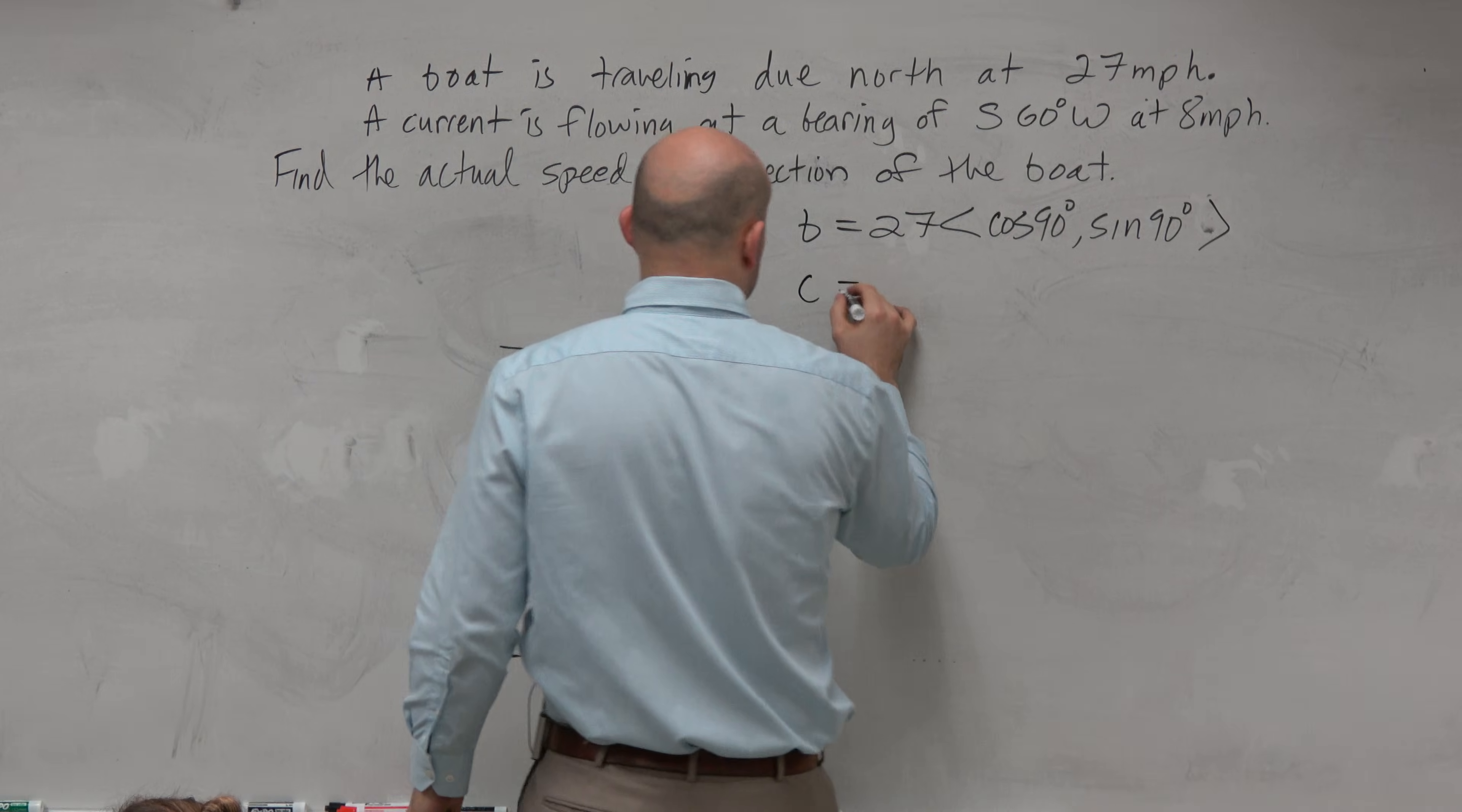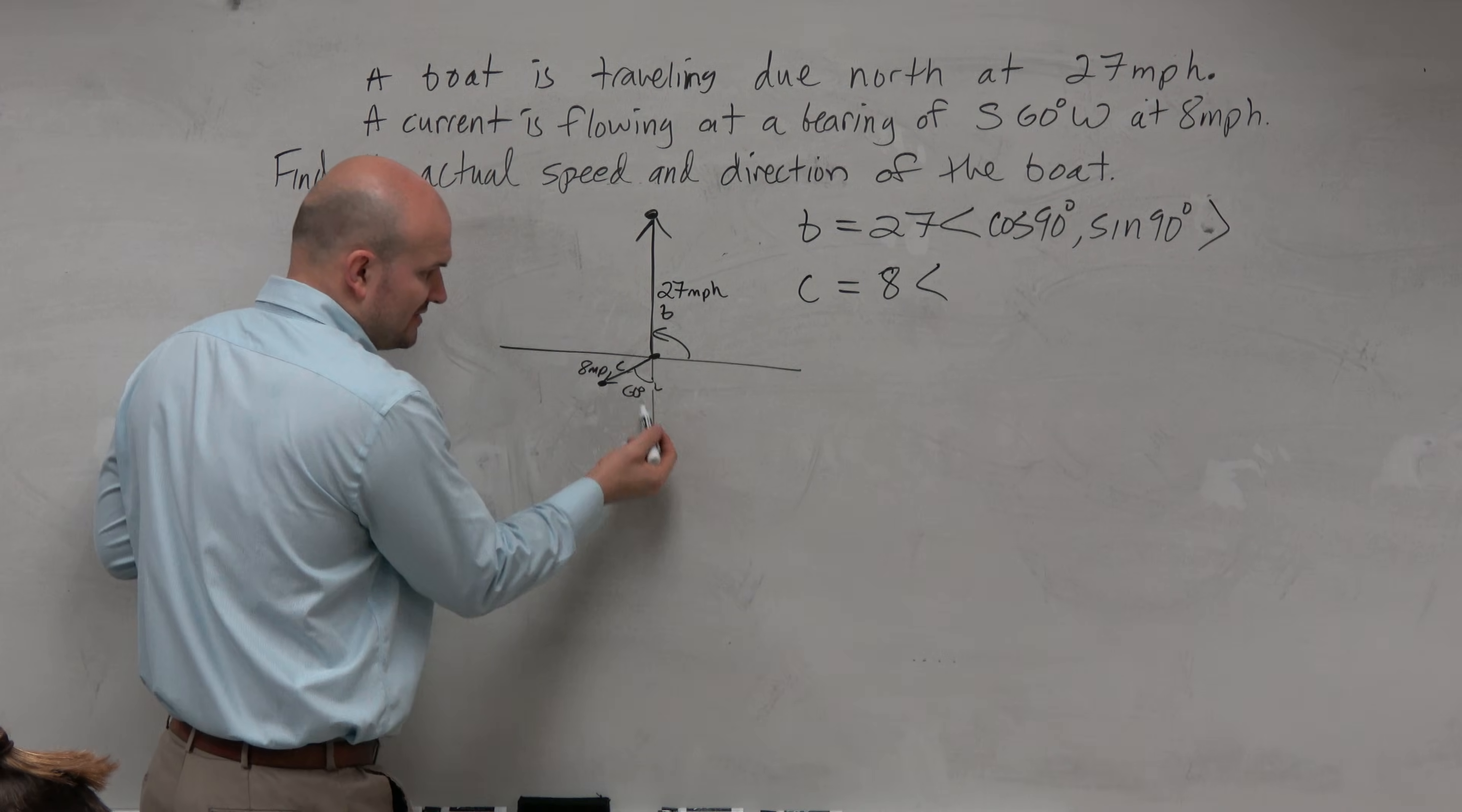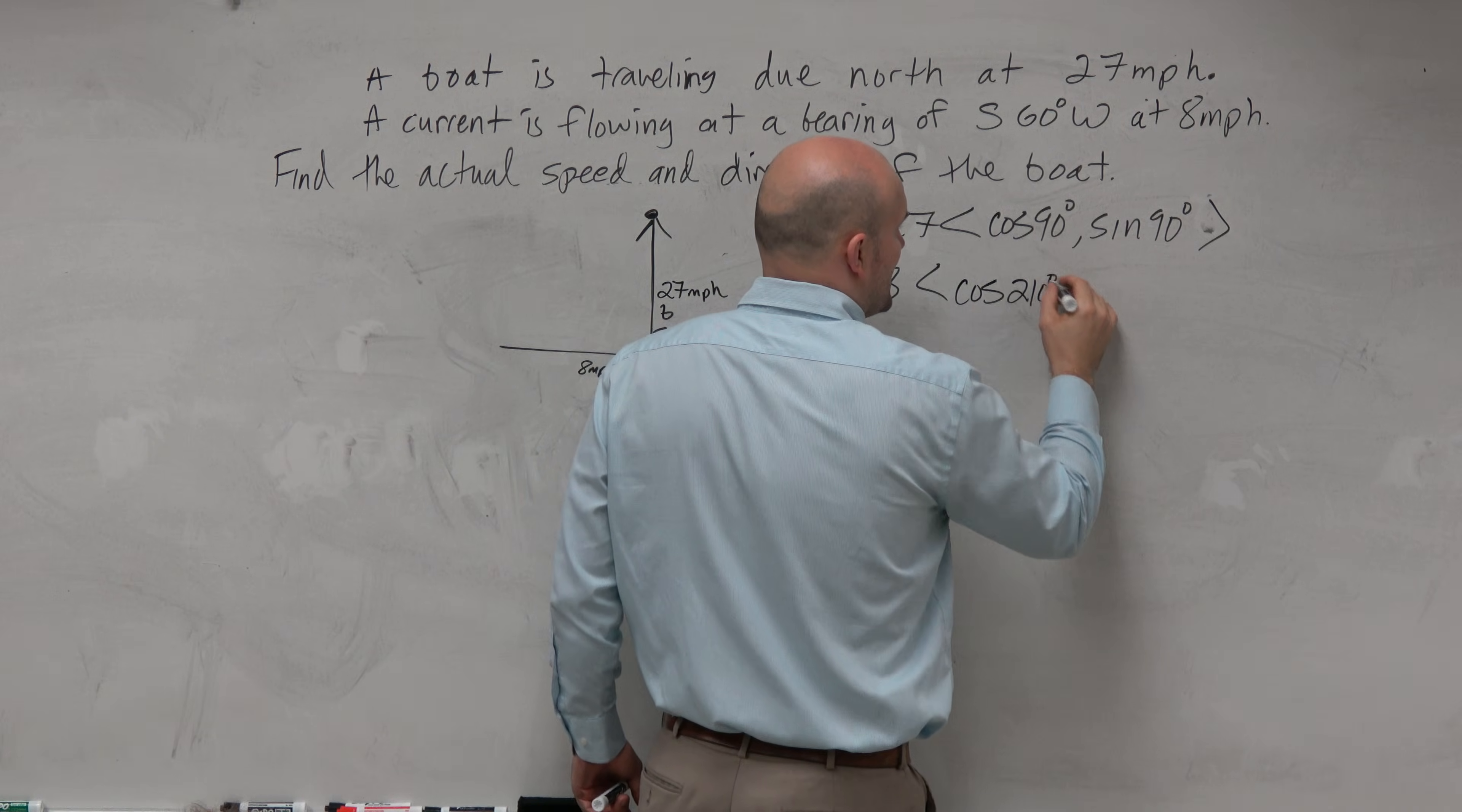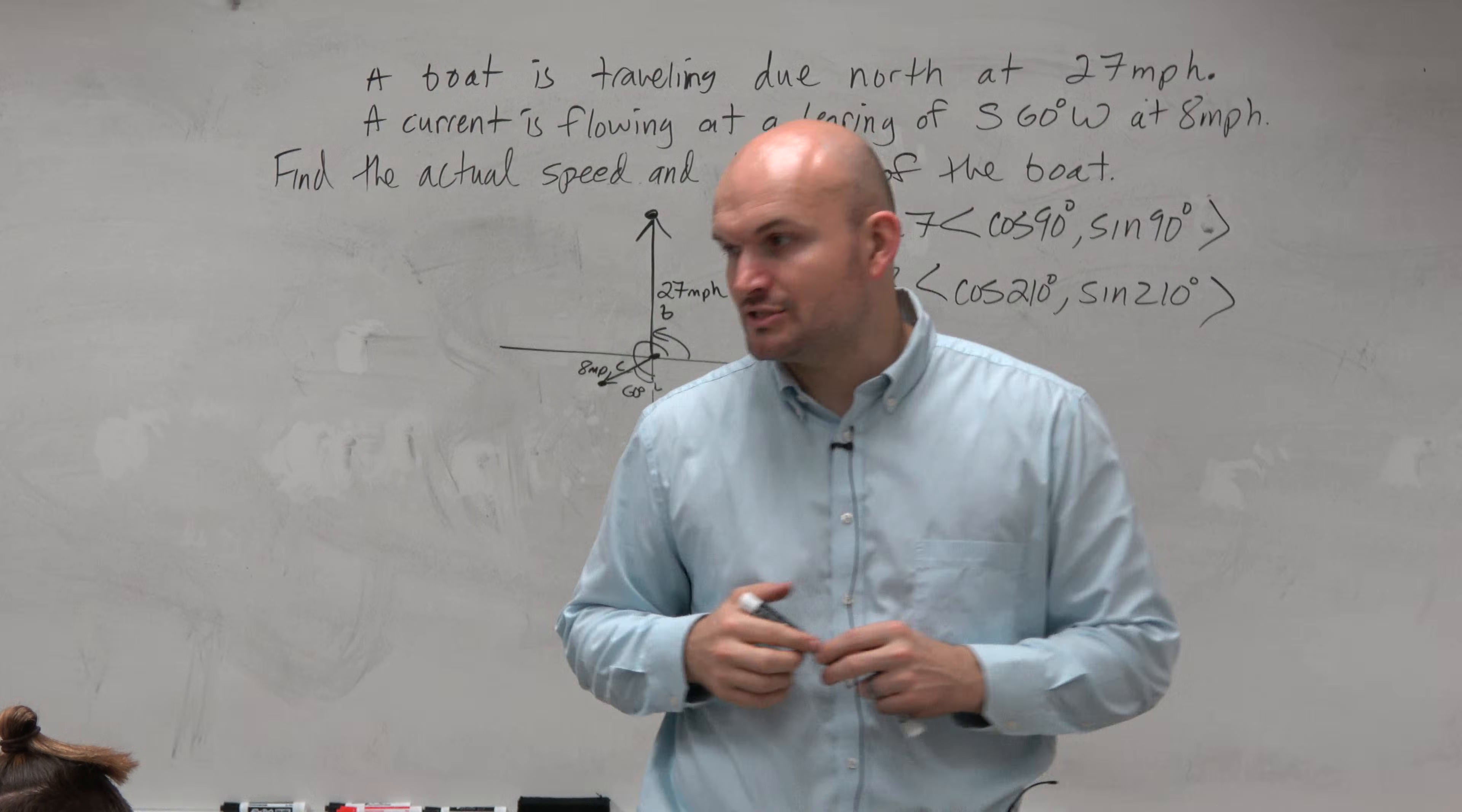So for the current, we're going to say that's going to have a magnitude of 8. And the angle in this one, now again, we've got to do the angle in standard form. Your calculator does not understand a bearing of 60 degrees. So if we know from here to here is 270, but we're going back 60 degrees, 210 degrees. So cosine of 210, sine of 210. So now we have created the two vectors in terms of their magnitude and their direction.